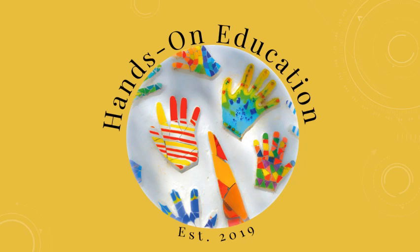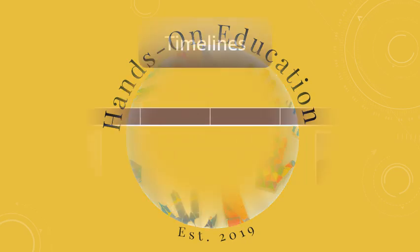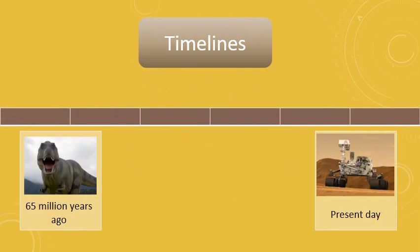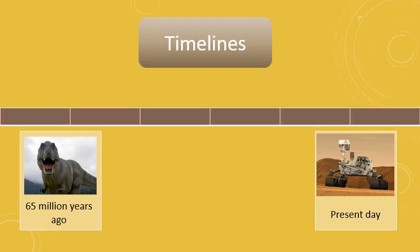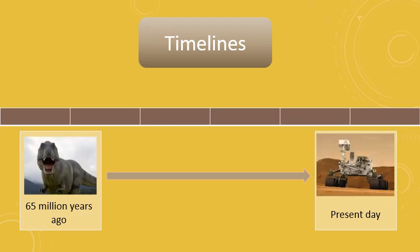Hi and welcome to Hands On Education. Today we will look at timelines. A timeline is a graph showing the order of events over a period of time. A timeline can cover any period of time in history.